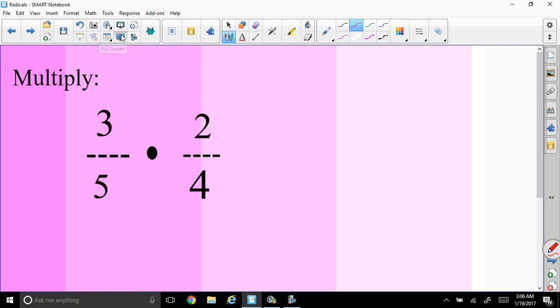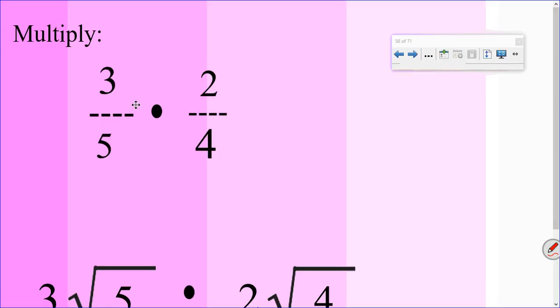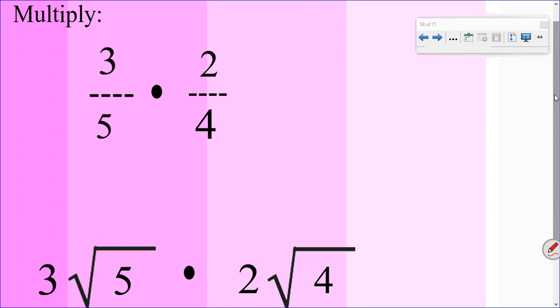So here we have a fraction, 3 fifths times 2 fourths. Multiplying fractions is similar to multiplying radicals. So how do we take care of multiplying the fractions? Well, first thing we do is multiply the numerator by the numerator. 3 times 2 will give us 6. And denominator times denominator, 5 times 4 will give us the denominator of 20. So our answer is going to be 6 twentieths.